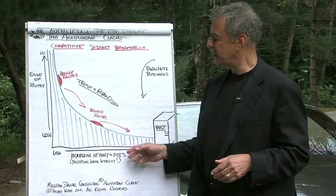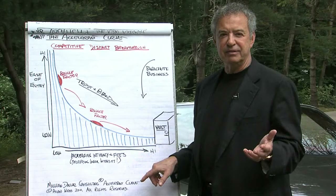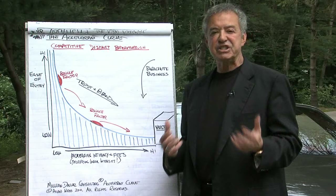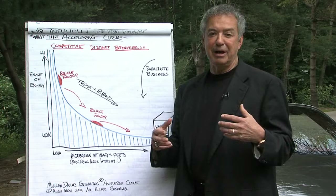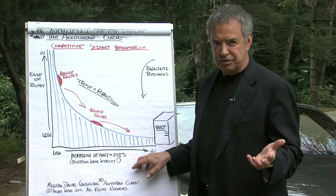All of these vertical lines represent different offerings that you have — coaching, audits, focus groups, OD consulting, teleconferences, workshops, whatever it is that you offer in your line of work. It could be house extensions, financial planning, taxes. Whatever you offer goes into these verticals. And you can have as many verticals as you like.